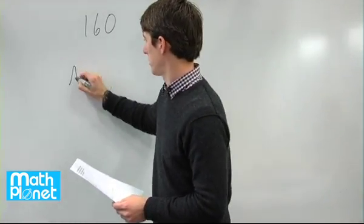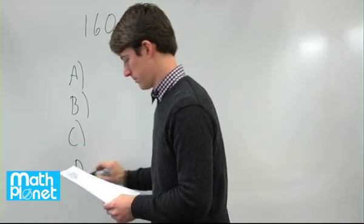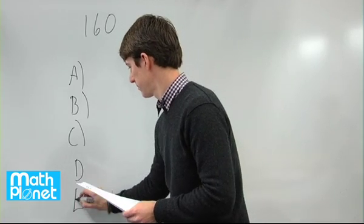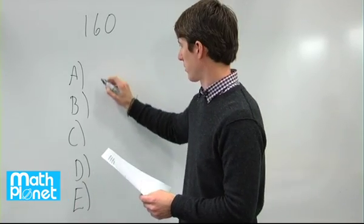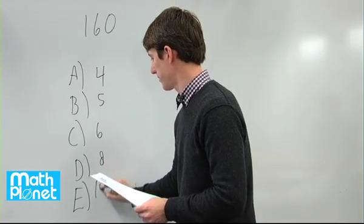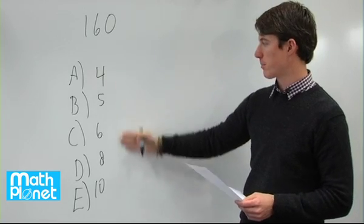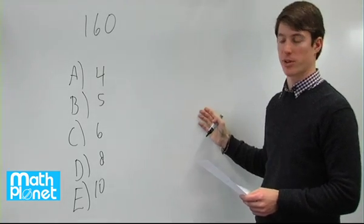We have a list of numbers which are 4, 5, 6, 8, and 10. If we divide 160 by these numbers we should get the number of students in the classroom.